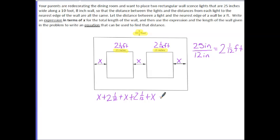The second thing they ask us to do is to write an equation that can be used to find the distance x. So what we do know is that if this expression represents the length of the total wall and we know the total length of the wall is 10 and two-thirds foot, they would therefore be equivalent. So our equation would be created by adding on an equal sign and setting it equal to 10 and 2/3.